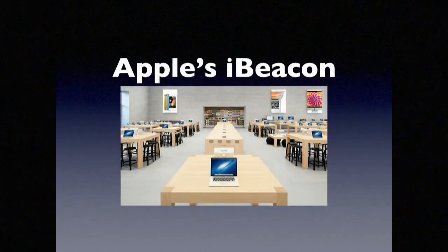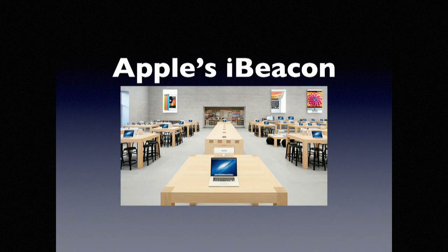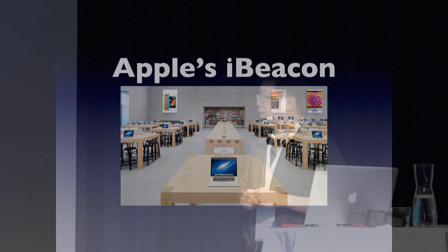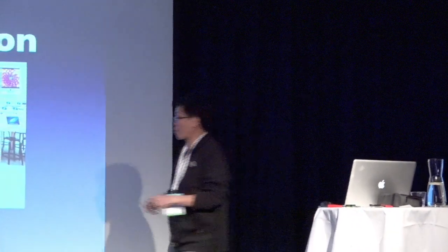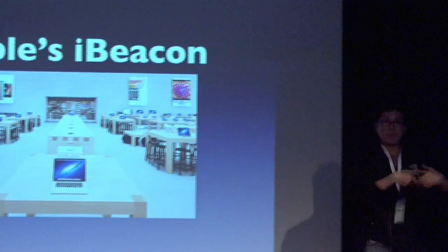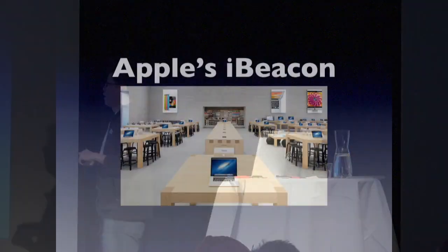Let's talk about iBeacon first. iBeacon is a trademark of Apple — whenever you talk about iBeacon, you're talking about Apple's implementation of beacons. In all their US Apple stores, they have beacons embedded under the table. Something interesting: Apple hides their equipment really well — you can't find their cash registers. The cash is hidden under the table, and printers are embedded inside the table. When you pay, they say hang on and get the receipt from under the table.